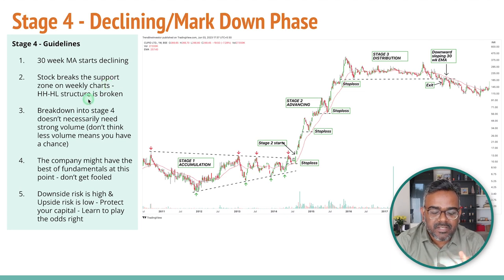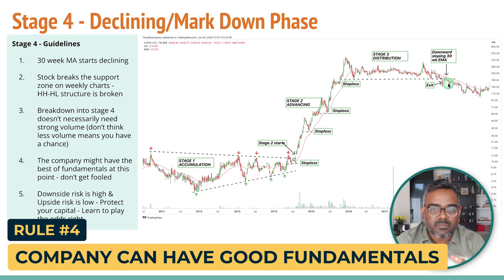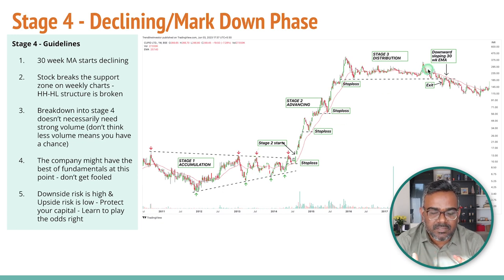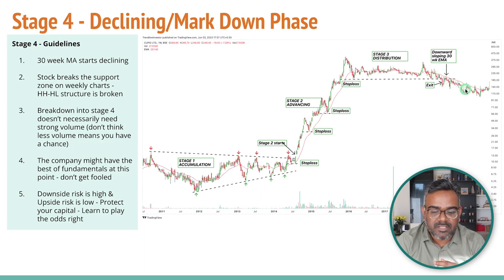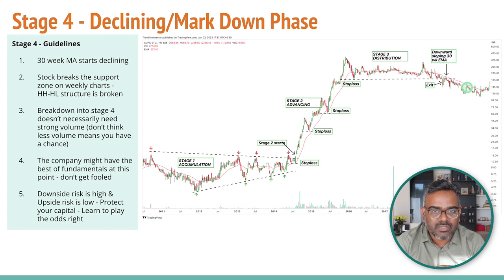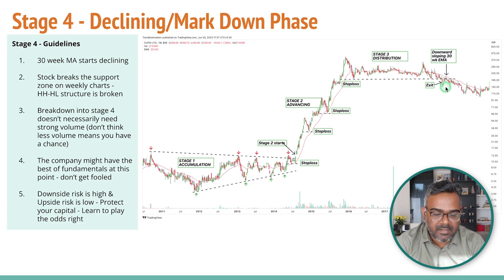Rule number three: during Stage 4, when the stock is just starting a downtrend, the stock will still be doing well in terms of fundamentals. When a stock is really spoken about everywhere and everything seems wonderful, but the stock is breaking down and forming a lower high, lower low structure — that is when you need to sell. If everyone is talking about a stock and everyone is in it, you do not have to hold it anymore. And especially if Stage 4 is breaking, you should not be holding it as an investment candidate.